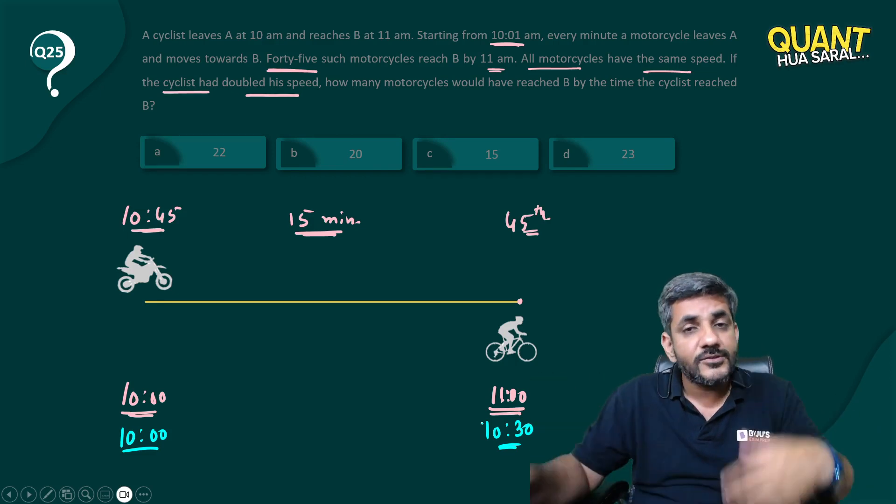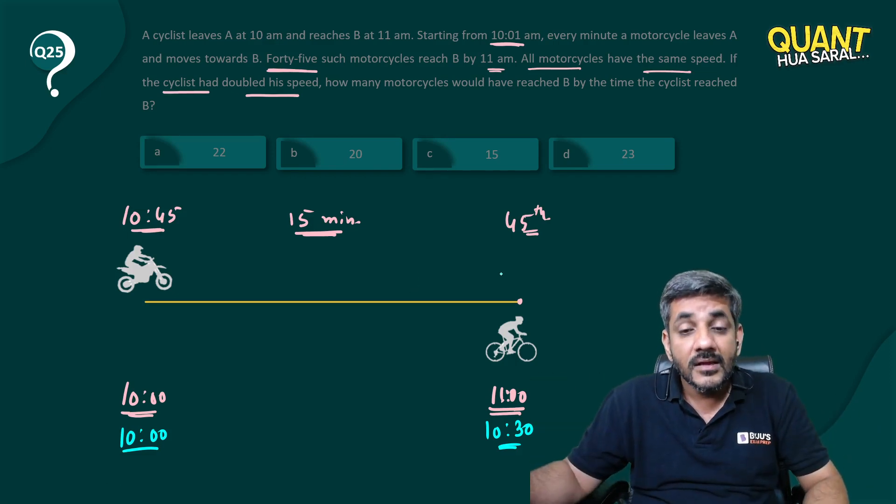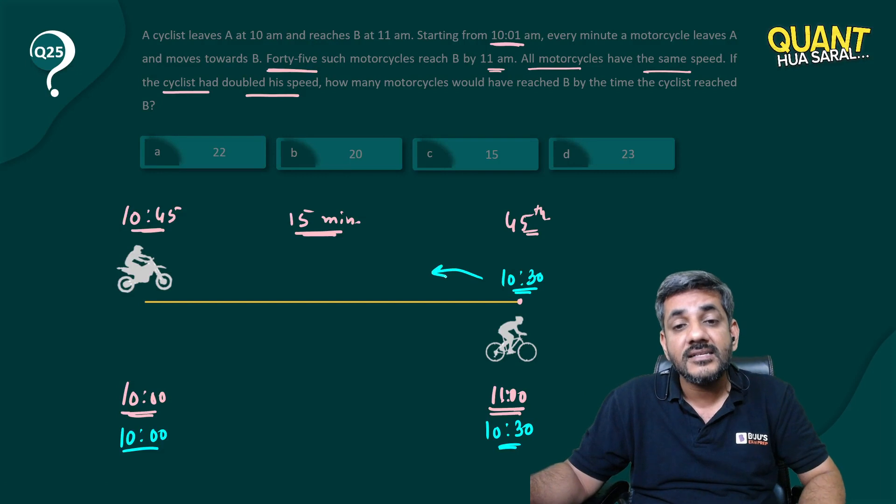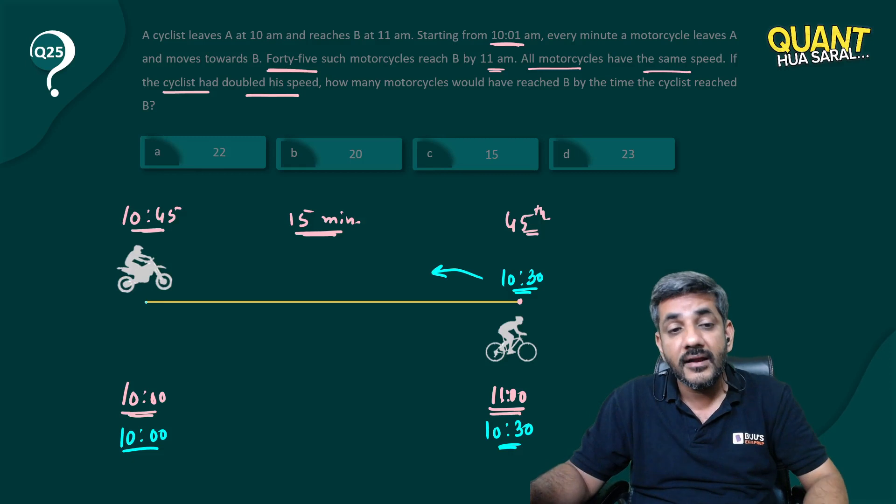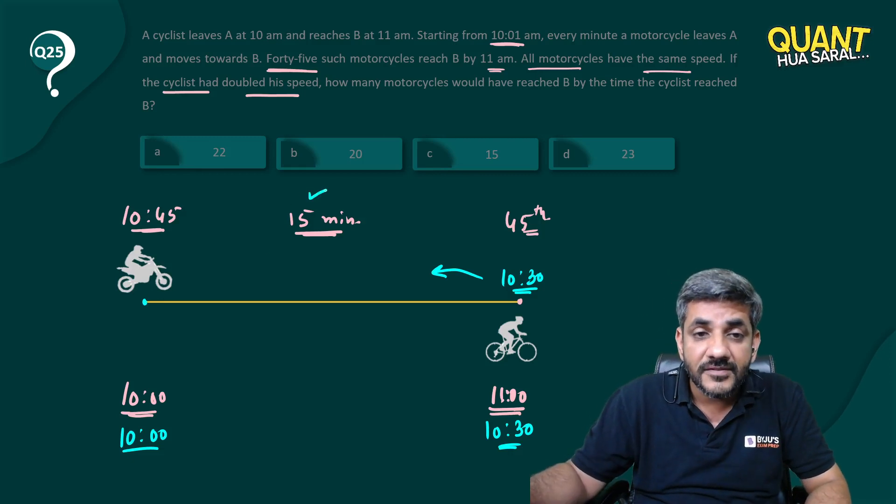So he is going to reach here at 10:30. Now the cyclist that is going to meet him at 10:30 here, at what time must this cyclist have started from there? I'm sorry, the motorcycle must have started from that end because the motorcycle takes 15 minutes.